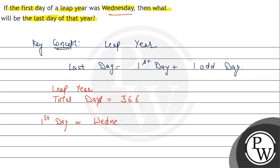According to the result, what will be the last day? Last day equals first day plus one odd day, which means Wednesday plus one odd day. Wednesday plus one — after Wednesday we have Thursday. So the last day is Thursday.